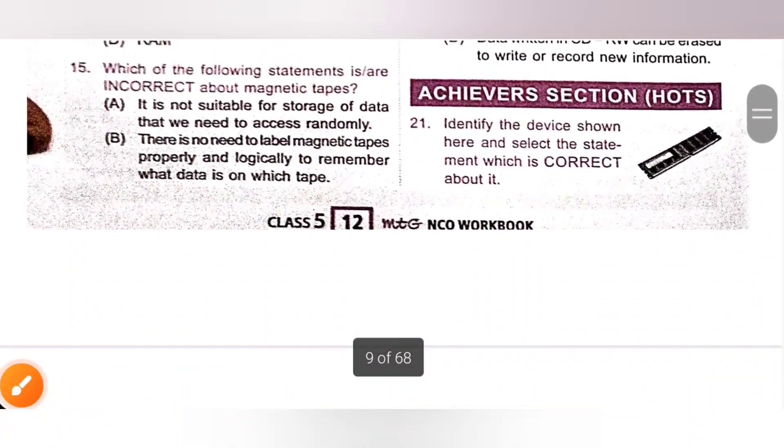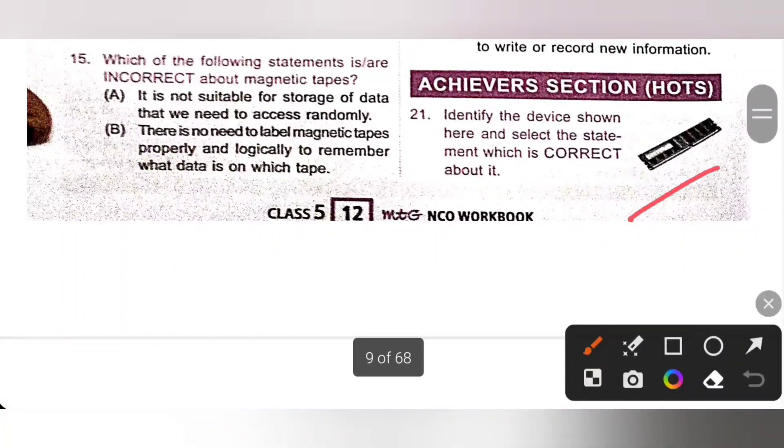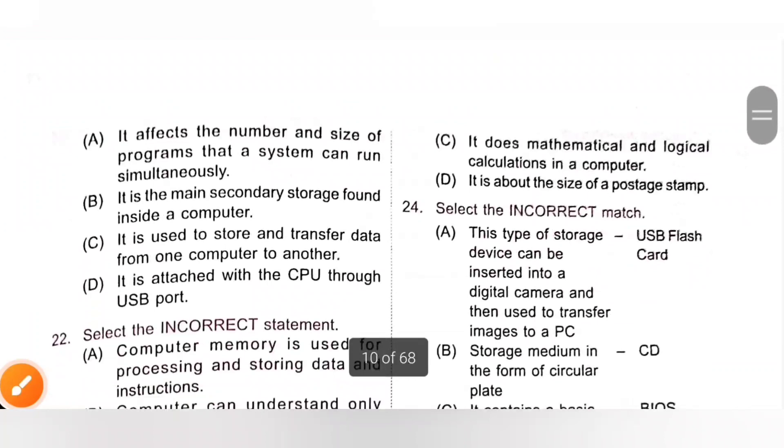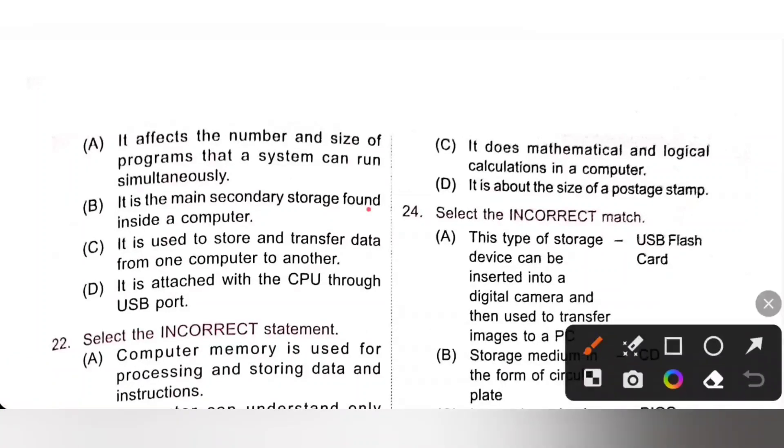Next, Achiever section 21. Identify the device shown here and select the statement which is correct about it. So the given device is RAM. Option A, it affects the number and size of programs that a system can run simultaneously. B, it is a main secondary storage found inside a computer. It is a primary memory.